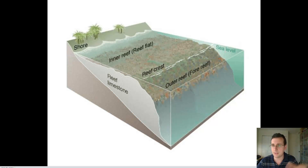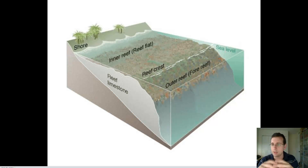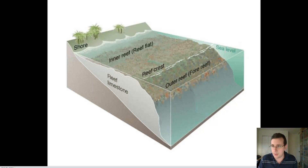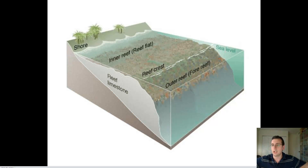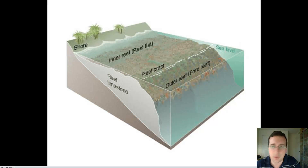It takes thousands of years to grow a large coral. Even under perfect conditions, coral grows very, very slowly — about a meter in something like 10 to 20 years. So to grow a coral reef that's kilometers around, you're talking thousands of years of growth.